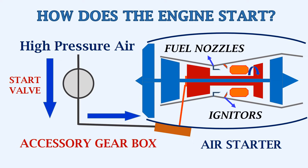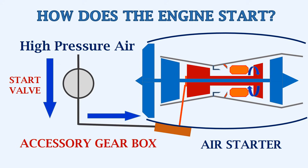This causes the N2 shaft's rotation speed to increase further. Slowly, the N1 shaft, or the low pressure shaft, starts to rotate. The fan, which is connected to the N1 shaft, also starts to rotate, which will result in suction of more air into the engine. This means the rotation speeds of N1 and N2 will increase further.